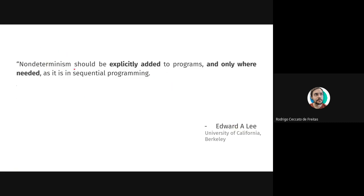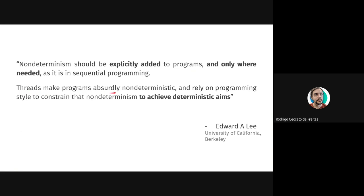Non-determinism should be explicitly added to programs and only where needed, as it is in sequential programming. So here's one problem with threads: we add unwanted non-determinism to the program, as threads make programs absurdly non-deterministic and rely on programming style to constrain that non-determinism. Partially, this happens because we're fitting parallelism into abstractions made for sequential computing. This work proposes another program execution model that fits parallel execution.